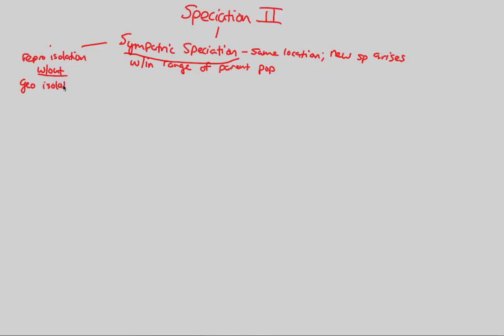That might seem very hard to imagine, and it is — it's very uncommon to see. But sometimes it does show up. Most of the time, sympatric speciation shows up in the form of what we call polyploidy. Poly means many, and ploidy refers to the ploidy number — diploid, haploid. We're going to expand on that knowledge in terms of sympatric speciation.